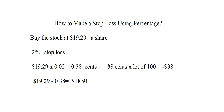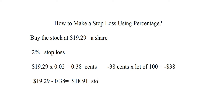So where do you put the stop loss in real terms? $19.29 is your purchase price, minus $0.38. That gives you $18.91, which is your stop loss price. This is what you call a stop loss using percentage of your money.